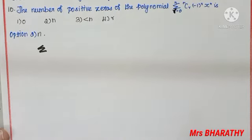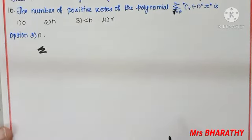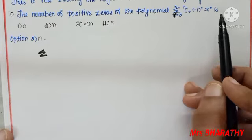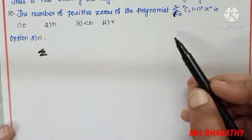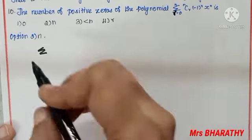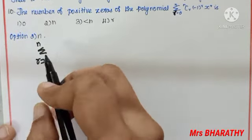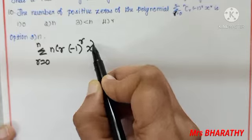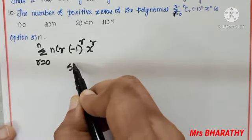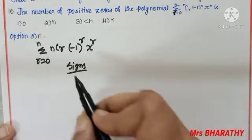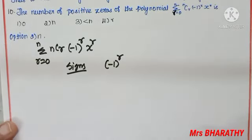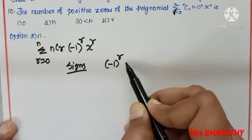Question number 10: find the number of positive zeros of the polynomial Σ (r = 0 to n) of ⁿCᵣ × (-1)ʳ × xʳ. The sign of each term is determined by (-1)ʳ only, since ⁿCᵣ and xʳ do not affect the sign pattern.